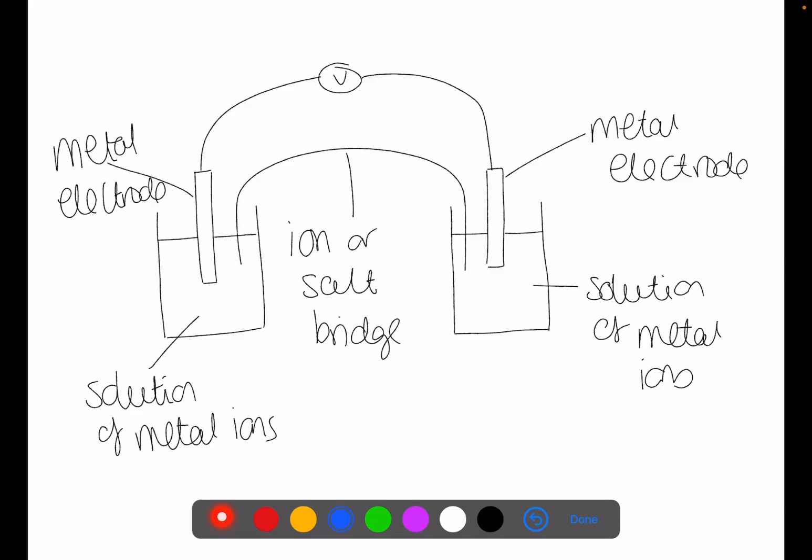One of the ways to deal with some of the problems of basic electrochemical cells is to set up two half cells.